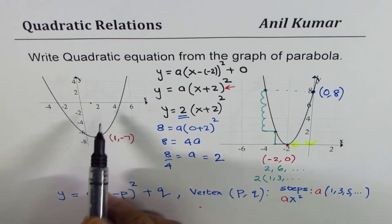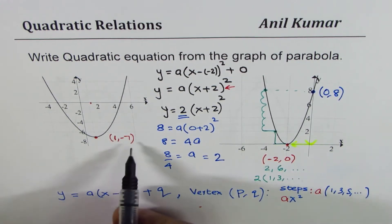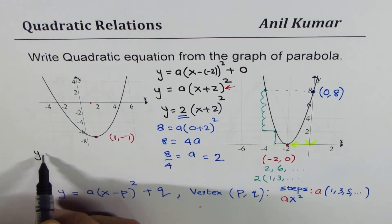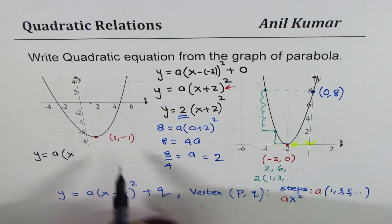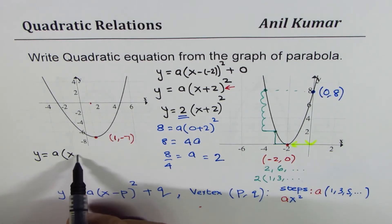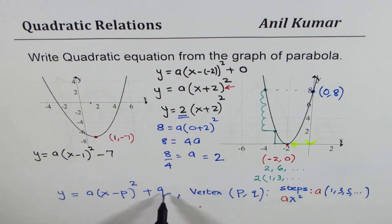So you can pause the video, write the equation for the second graph. You can identify that vertex is at 1, minus 7. So first step, let me write this as y equals to a times x, p value is 1, so you say minus 1 whole square minus 7. That gives me the equation.